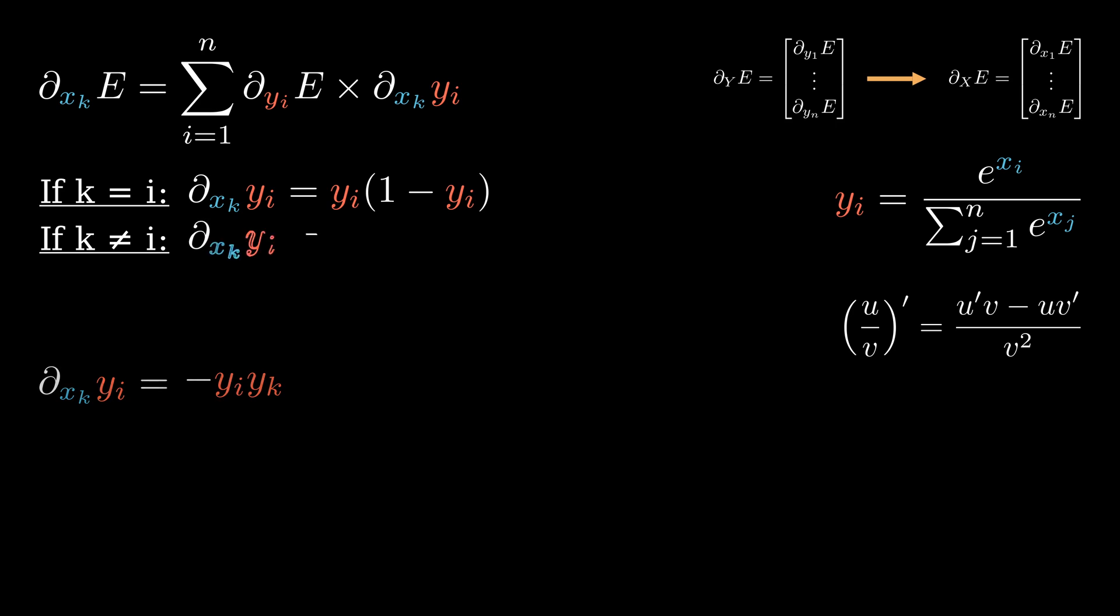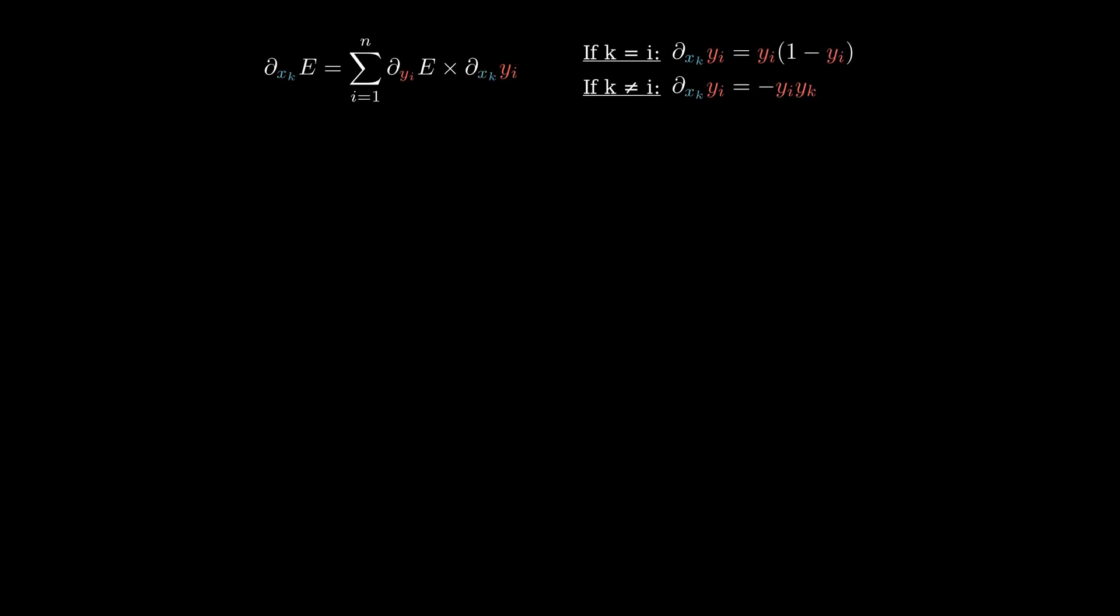Alright, we have the derivative of the softmax function. Let's see how we can work on this result to obtain something efficiently computable. Remember, we need to compute the whole vector containing the derivatives of the error with respect to the input. If we explicit each element in that vector, we get this.